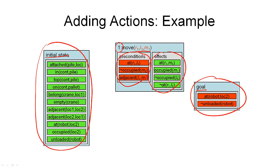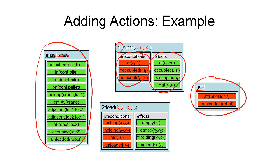The preconditions are in red here, because I still need to achieve these conditions if I want to be able to execute this operator. The effects are given as green, because if I execute this action, then these things will necessarily become true — there's no other activity I need to do to make these conditions true. And of course, I can add any number of actions to this plan as shown here. I've added a second action with a new reference, a new set of variables, its own preconditions and effects.